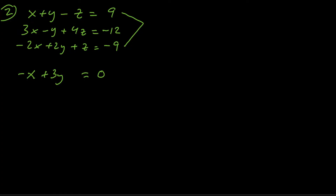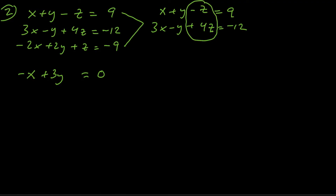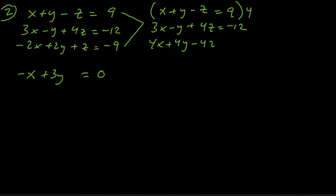We have equation one: x plus y minus z equals 9, and equation two: 3x minus y plus 4z equals negative 12. We have 4z in the bottom and negative z in the top, so we multiply the top equation by 4 to get negative 4z, making it 4x plus 4y minus 4z equals 36. Adding straight down: 7x plus 3y equals 24 — the z's cancel.